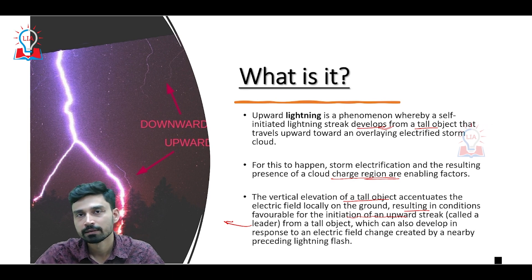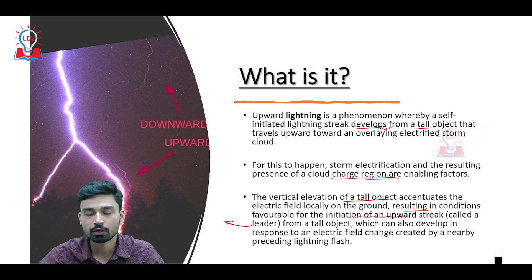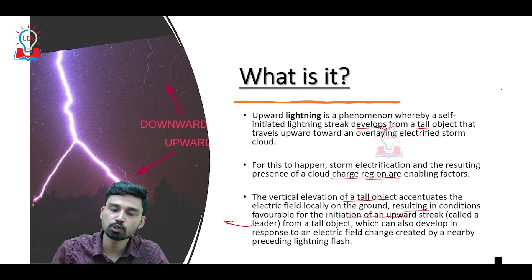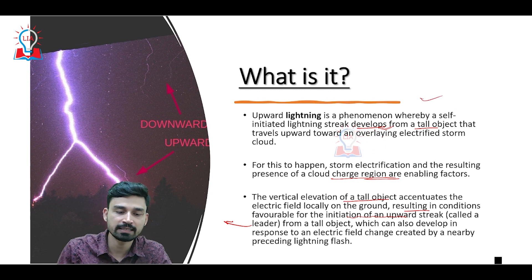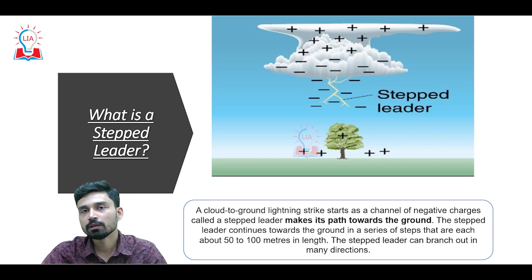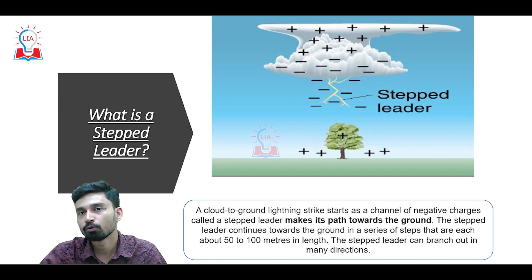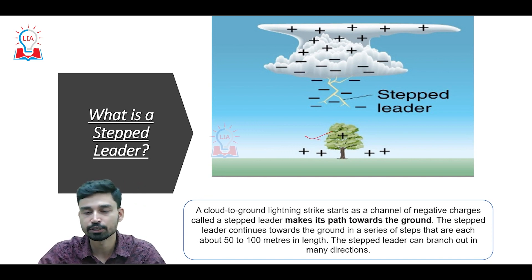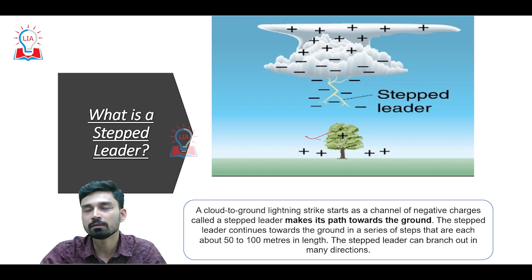That means, if in a nearby region you have a normal downward lightning strike that has occurred, as a response to this downward lightning, many times we can also see the phenomena of upward lightning, as we can see in this particular picture. The most important event that has to happen for upward lightning to occur is the development of the stepped leader.